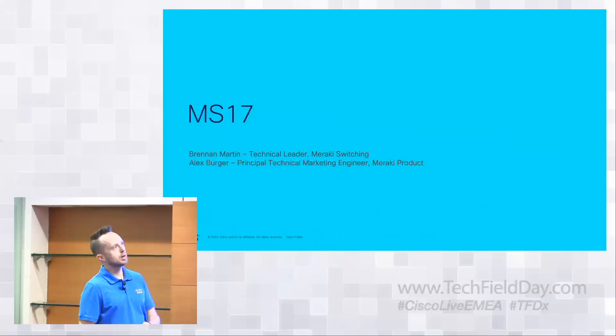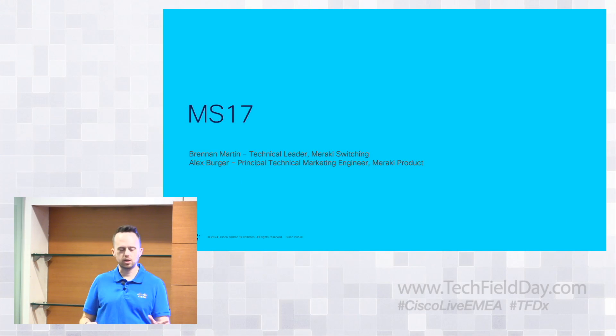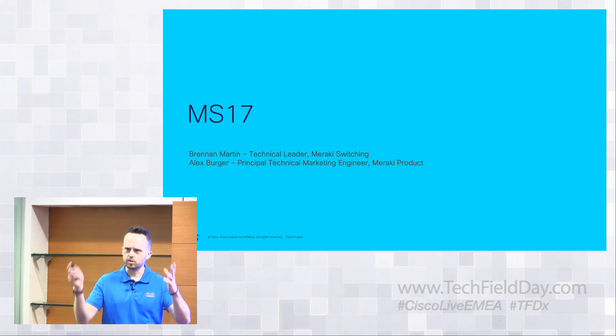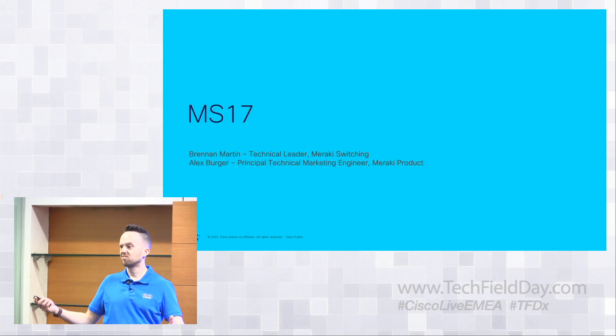I'm going to give you a sneak peek of what's coming in MS17. This is the next major firmware release for the Meraki Switching platform. We are anticipating this to beta in the second calendar quarter — so spring — with stable GA later in the third quarter, so fall.